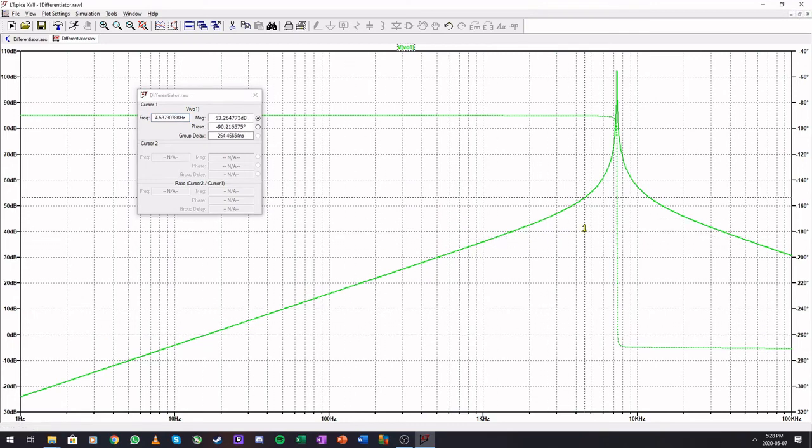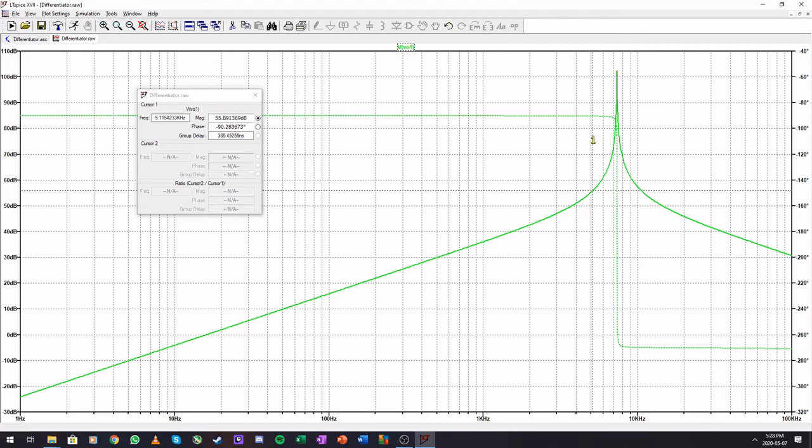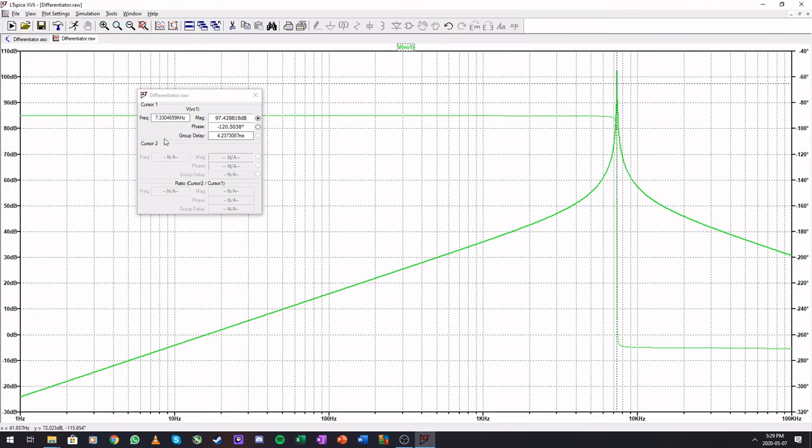But up here you can see that we have a phase being constant and then the phase suddenly changes and we have this resonant peak. This happens at 7.3 kilohertz, so that is why we need to add that zero in.